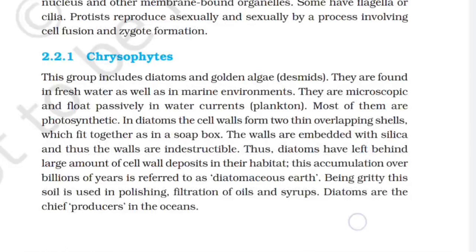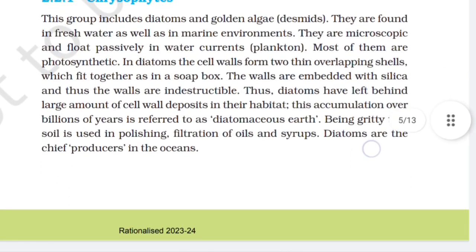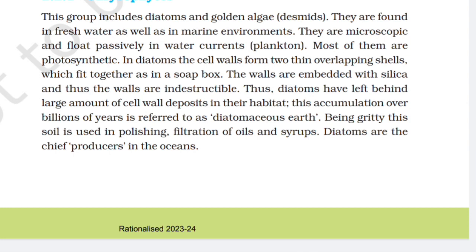2.2.1 Chrysophyta. This group includes diatoms and golden algae (desmids). They are found in freshwater as well as in marine environments. They are microscopic and float passively in water currents; most of them are photosynthetic. In diatoms, the cell wall forms two thin overlapping shells which fit together as in a soapbox. The walls are embedded with silica and are thus indestructible. Diatoms have left behind large amounts of cell wall deposits in their habitat; this accumulation over billions of years is referred to as diatomaceous earth. Being gritty, this soil is used in polishing and filtration of oils and syrups. Diatoms are the chief producers in the ocean.